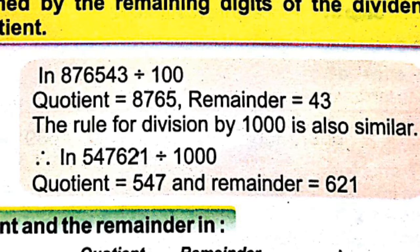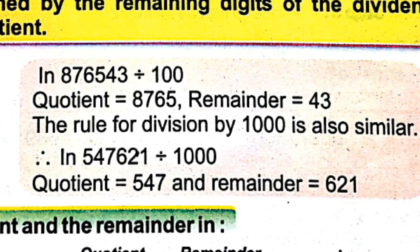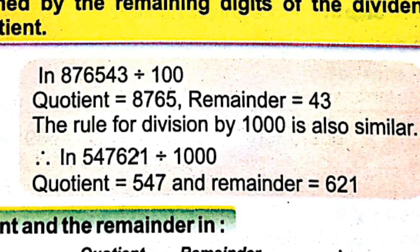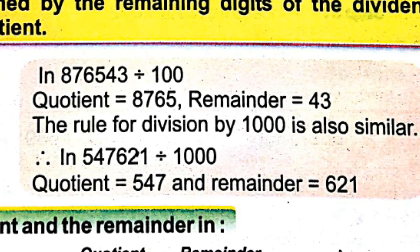The rule for division by 1000 is also similar. If we divide by 1000, the remainder is the number formed by the hundreds, tens, and ones digits. For example, given the number 547621, the remainder is formed by the digits 6, 2, 1 — that is 621 — and the quotient is the rest of the digits: 5, 4, 7, giving 547.